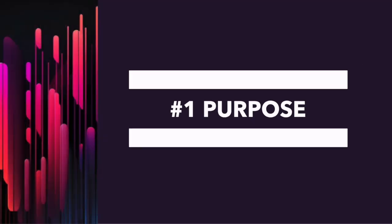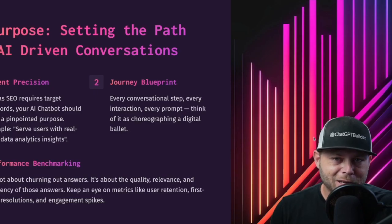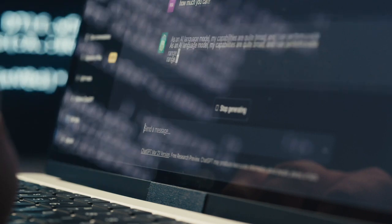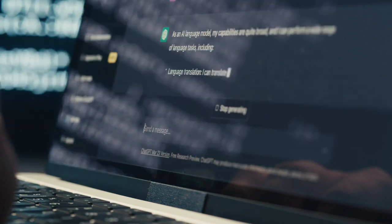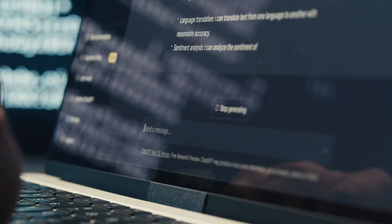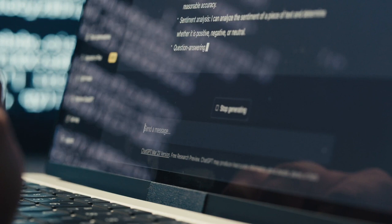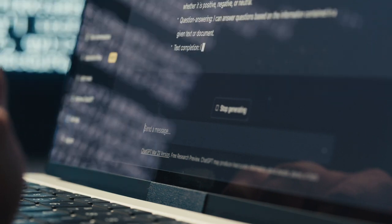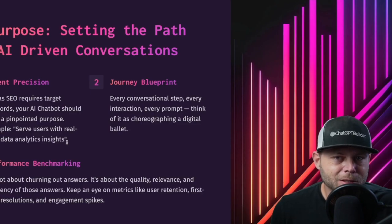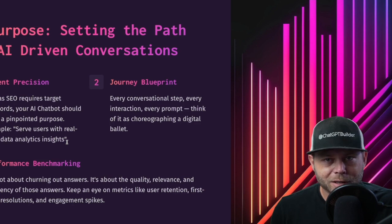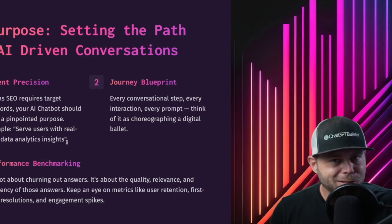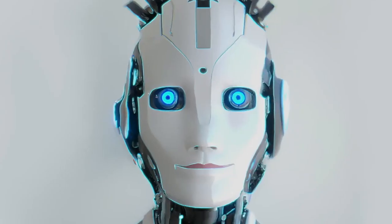Number one, the first of the five P's is purpose. Every chatbot should have an overall purpose, whether it's customer support or making reservations, whatever that may be. It's best practice to define the purpose of your chatbot. You can be as detailed or as minimal as you like, but a lack of detail will result in an uncontrolled bot, and that's something we don't want.